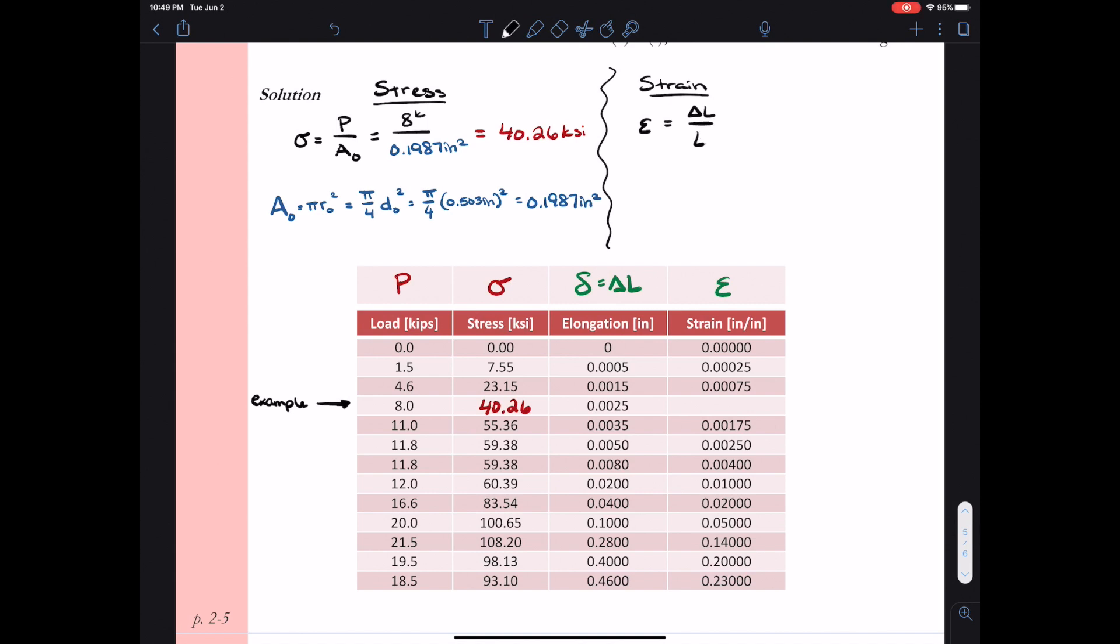Now I need to calculate strain. My formula for strain is delta L over L0. So I have my elongation from my test, and then I have my initial length. Now my initial length is the same as the gauge length mentioned above. So my gauge length is just an engineering term for the initial length of the specimen. So it tells me that my gauge length is 2.00 inches. I know that delta L from my test, I recorded that it was 0.0025 inches. So I plug that into my formula for strain and I calculate that the strain is 0.00125.